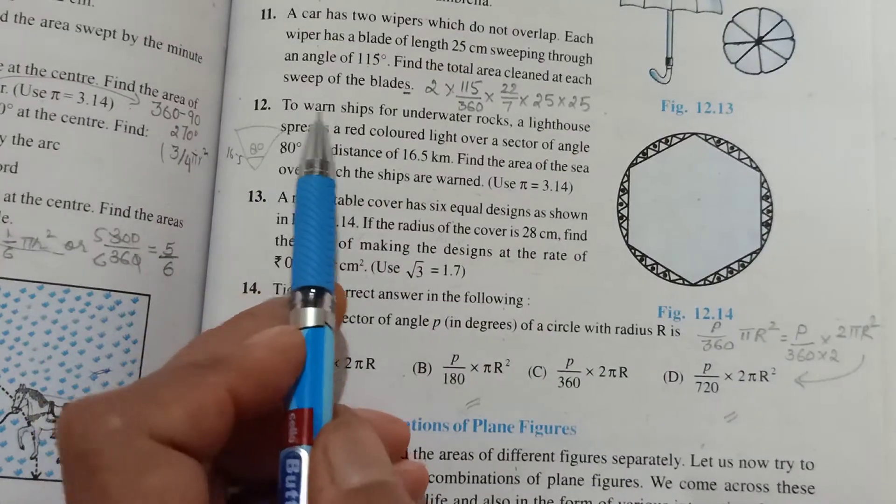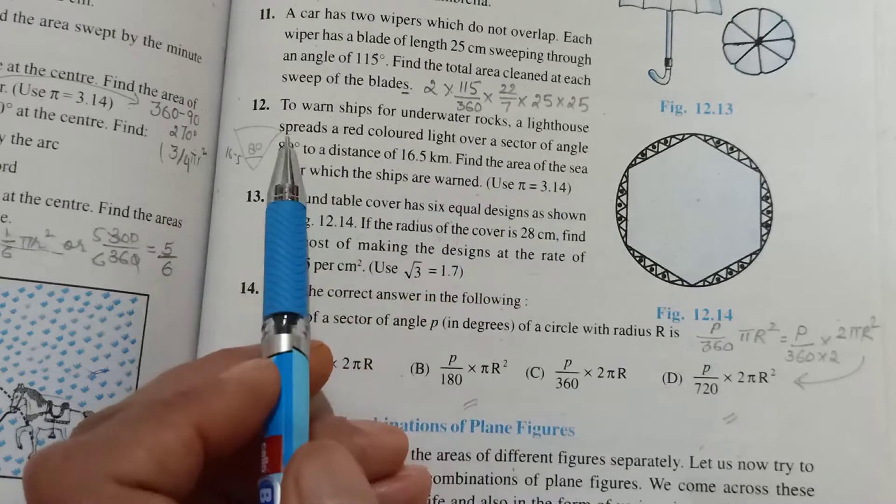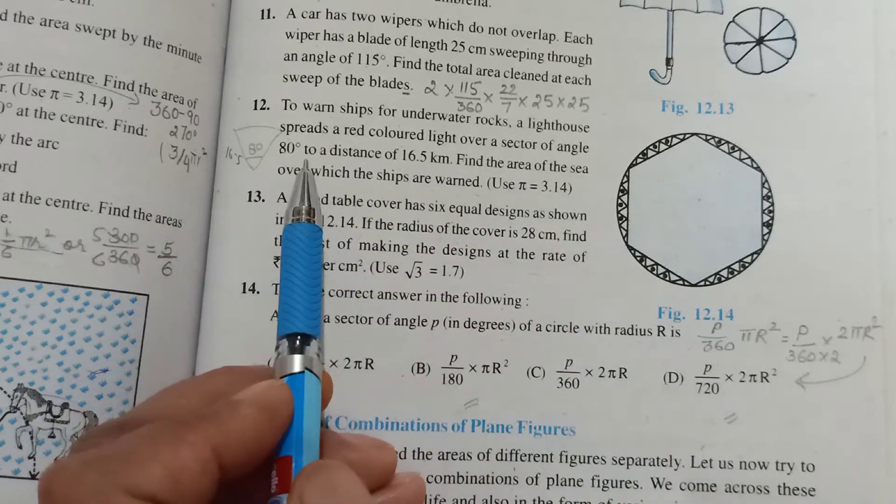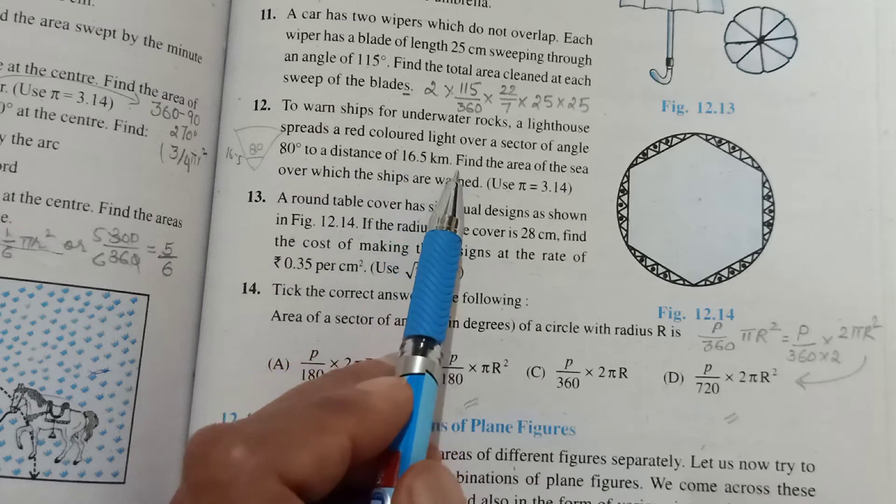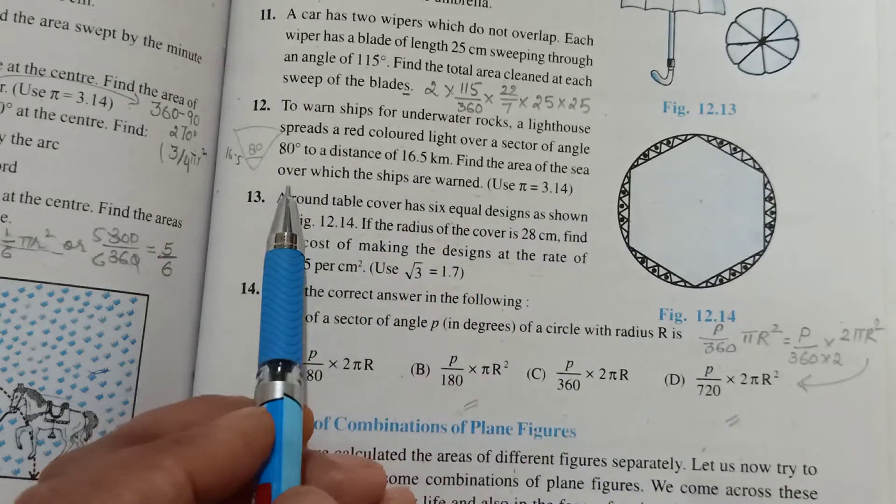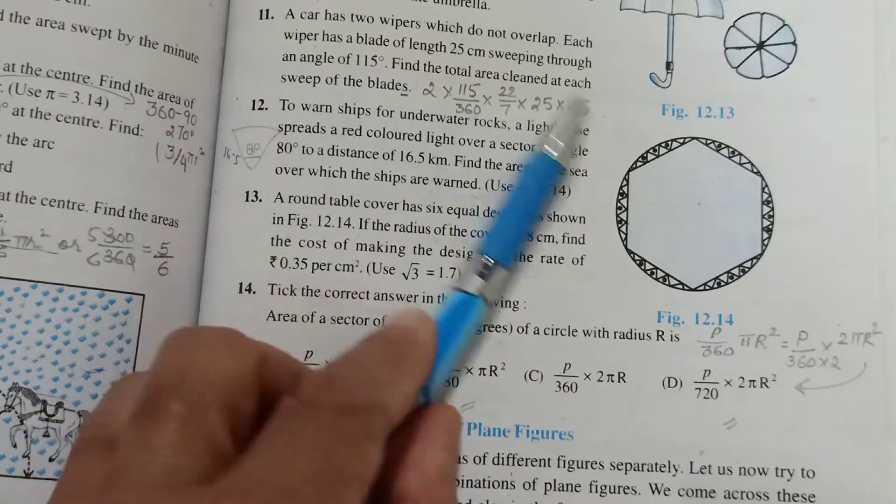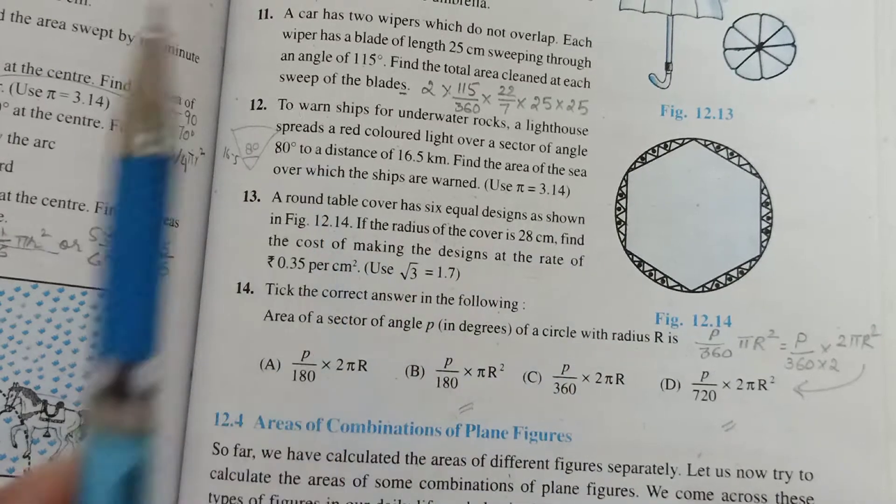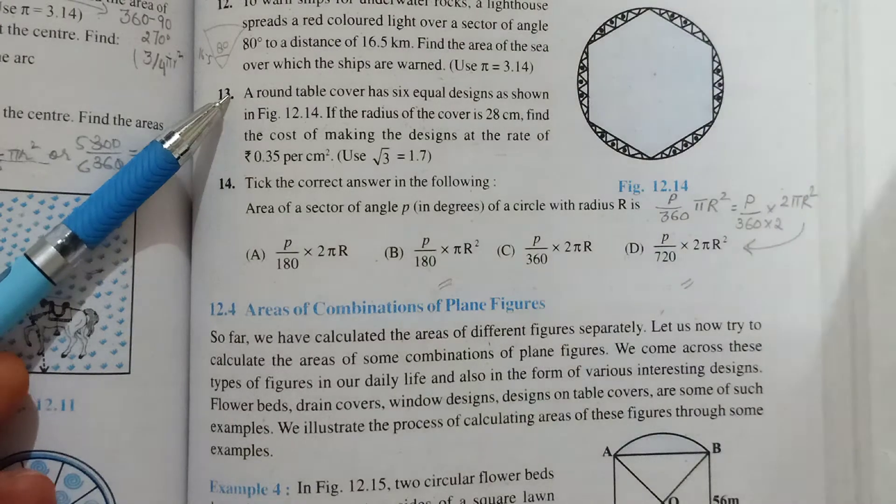Problem 12 is also simple enough, you will try that as well. To warn ships for underwater rocks, a lighthouse spreads light over a sector of angle 80°, so θ is 80°. Distance 16.5 kilometers becomes radius r. Find the area of the sea that can be swept - this is also area of sector. Everything is given, so try this one on your own, simple enough.